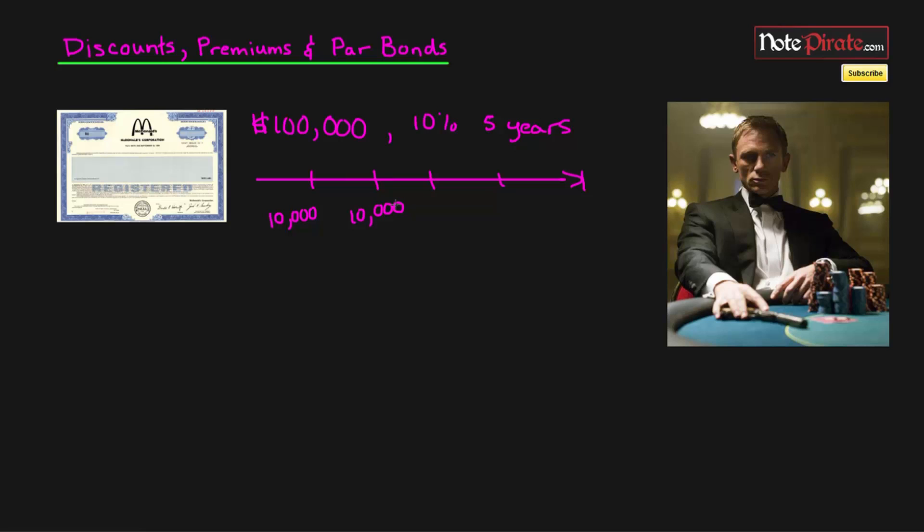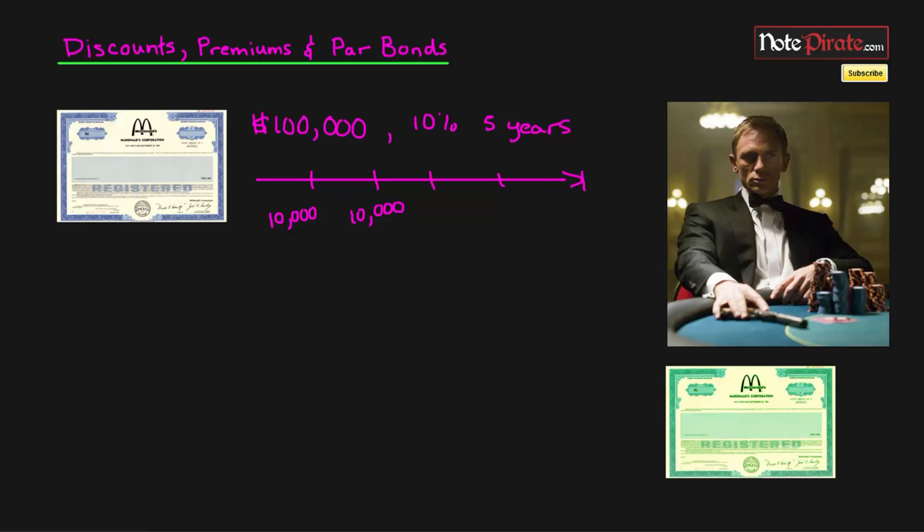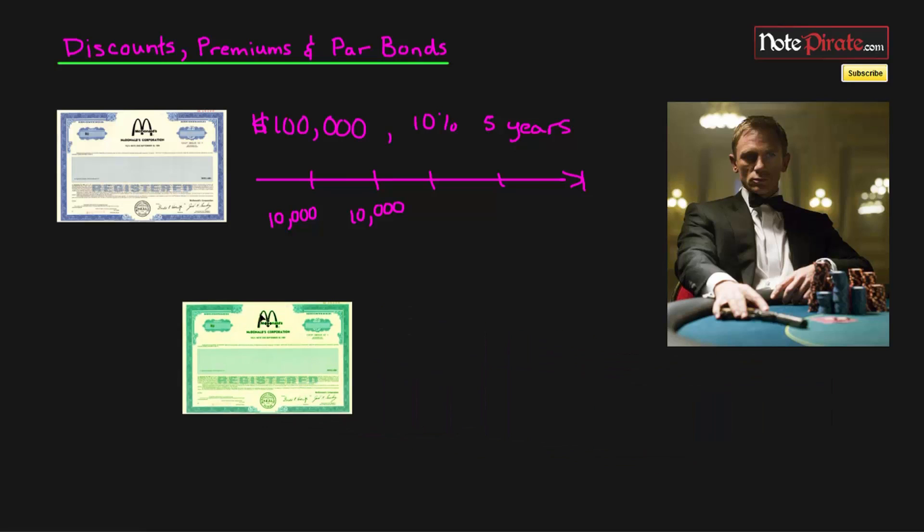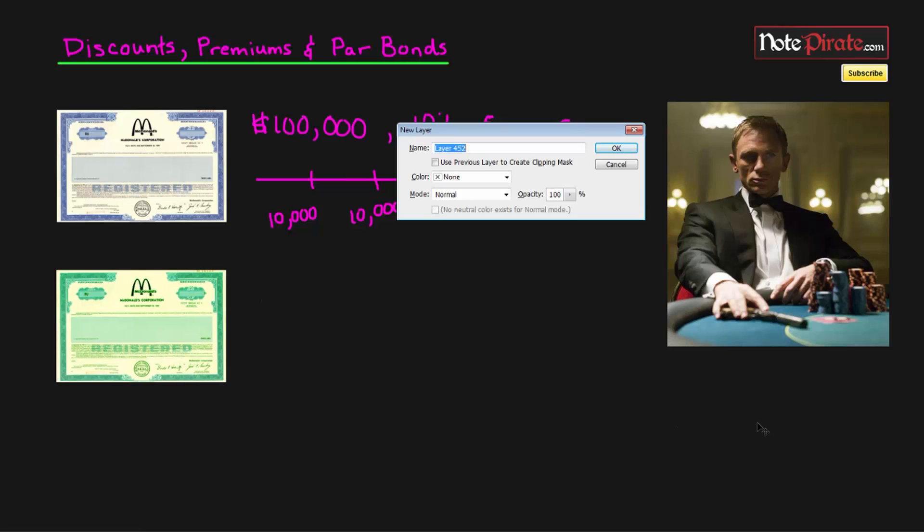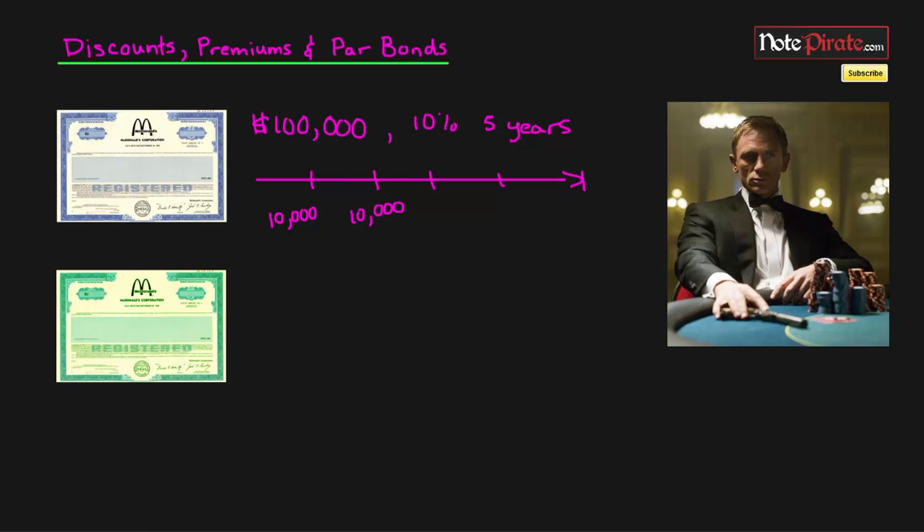Now let's say one year from today we decide to issue another $100,000 bond, but interest rates have changed due to market supply and demand. Therefore, this second bond, the green bond that I have in the bottom right corner, which I'm moving at the moment, is going to be issued at 12%. So the face value is going to be the same, it's going to be $100,000.